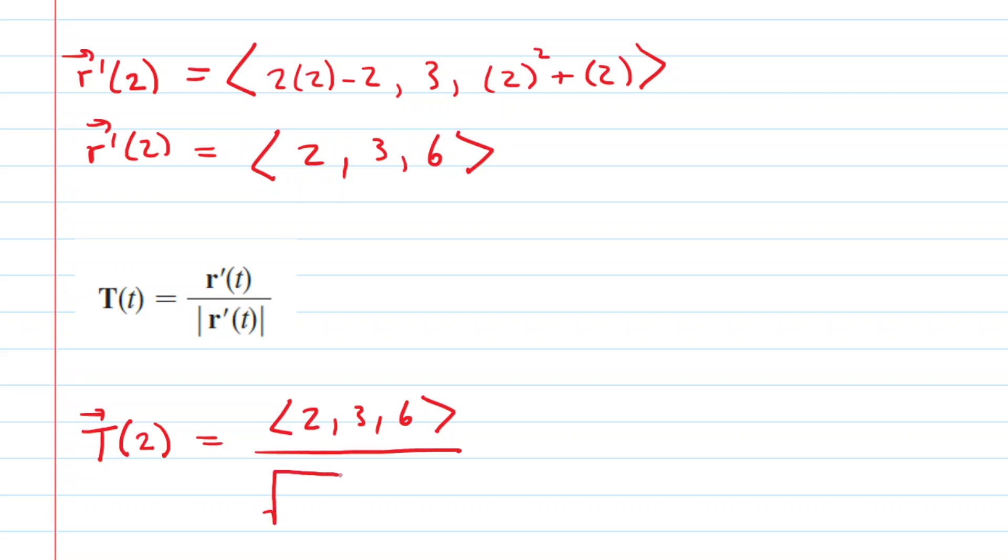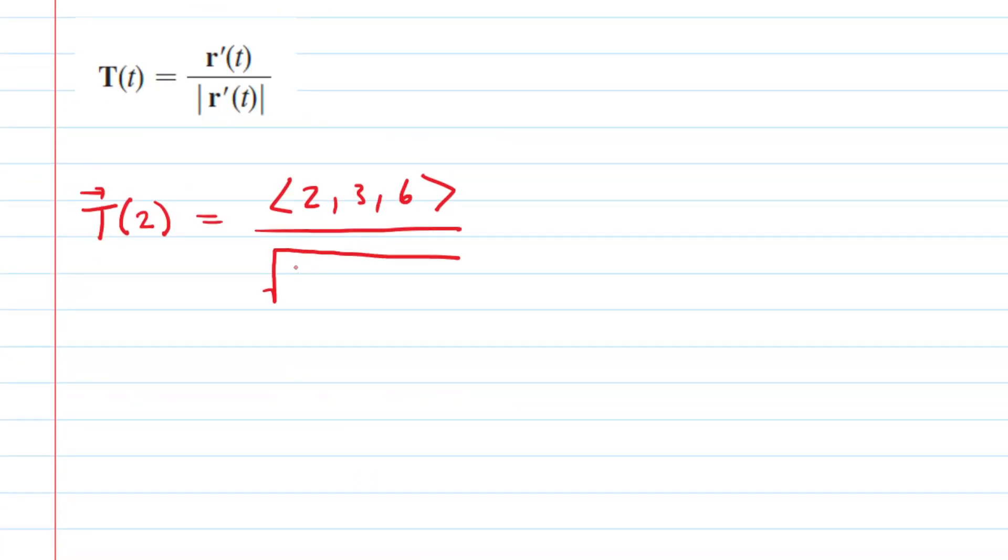Now recall that the magnitude is the square root of the sum of the squares of the components. It's basically a three-dimensional Pythagorean theorem. So you take the square root of your x component squared plus your y component squared plus your z component squared. We'll simplify the denominator because we have the square root of 4 plus 9 plus 36. And so that's going to be 49.